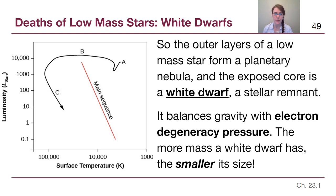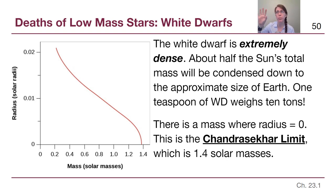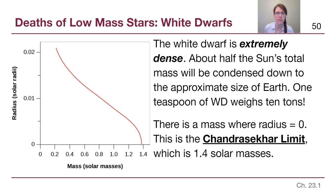If we plotted all the different possible sizes, a radius of 0.01 solar radii means it's about a hundredth the size across of the Sun — which is roughly the size of Earth. So as a quick memory aid, white dwarfs are roughly the size of Earth, but they have masses comparable to the Sun. Our own Sun will leave behind a white dwarf that is about half of its mass, though that ratio isn't always half and half for all stars.